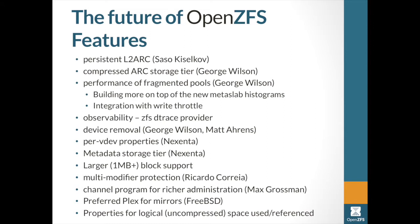Other work in progress: persistent L2 ARC, which has been in testing for some time. Also, a compressed ARC storage tier — currently there's the ARC (in-memory) and the L2 ARC (typically an SSD overflow). This adds a middle tier: data accessed very frequently stays in the ARC as-is, but data accessed less frequently and about to be evicted passes through an intermediate compressed stage, fitting more into the ARC for better performance.